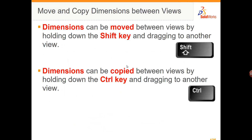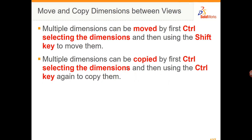When you create your dimensions you can move them from one view to another by pressing the Shift key, or copy them by pressing the Control key. If you need to move multiple dimensions, first Control-select them and then use the Shift key to move them. Multiple dimensions can also be copied by first using the Control key to select the dimensions and then using it again to copy them.